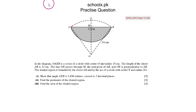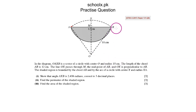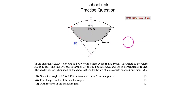In the diagram, OAXB is a sector of a circle with center O. OB is 10 cm, hence OA will also be 10 cm because of the radius, and OX will also be 10 cm.